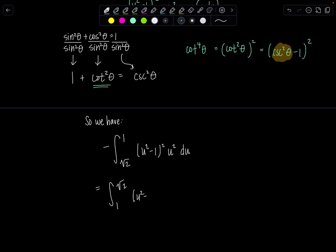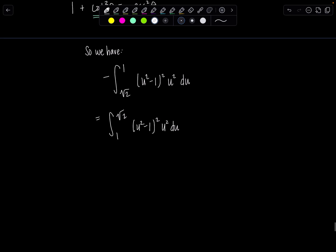It's just a matter of multiplying everything out and taking the antiderivative, but it should be smooth sailing from here. So 1 to √2, this will be u to the fourth minus 2u squared plus 1 times u squared du. And then distribute that throughout: 1 to √2, u to the sixth minus 2u to the fourth plus u squared du.